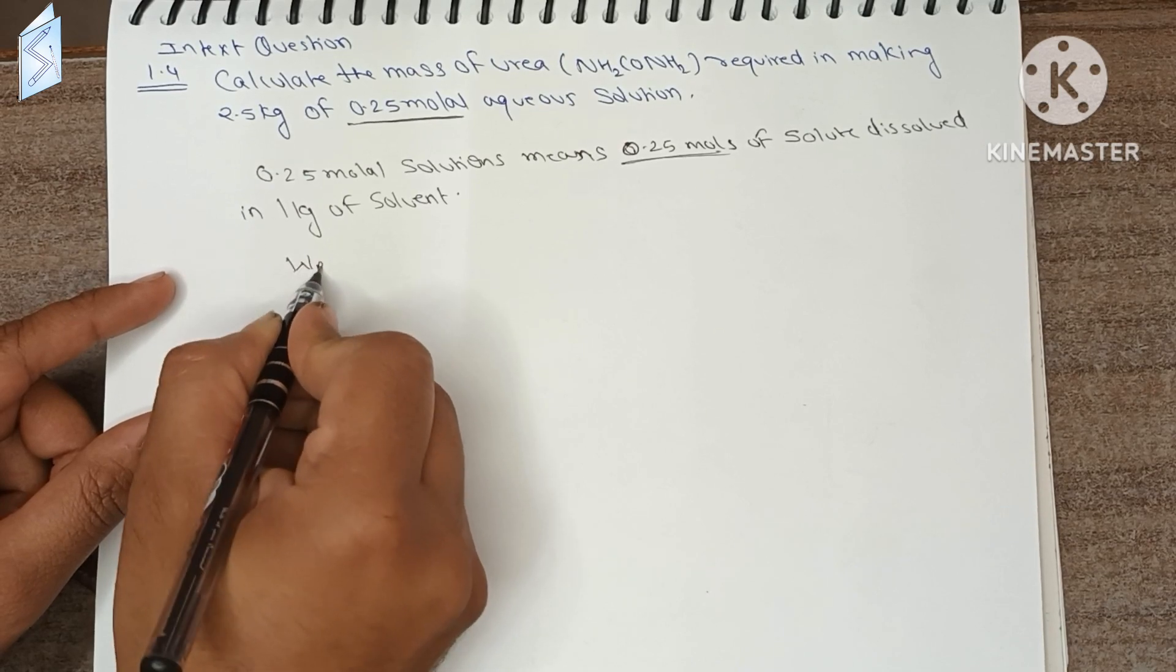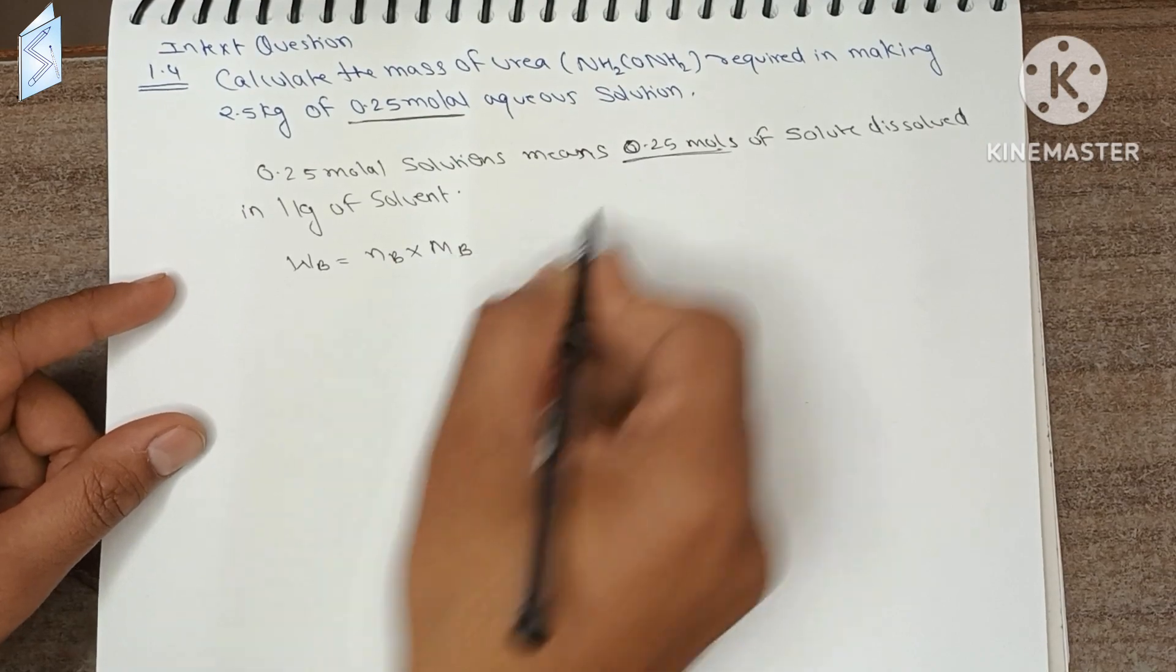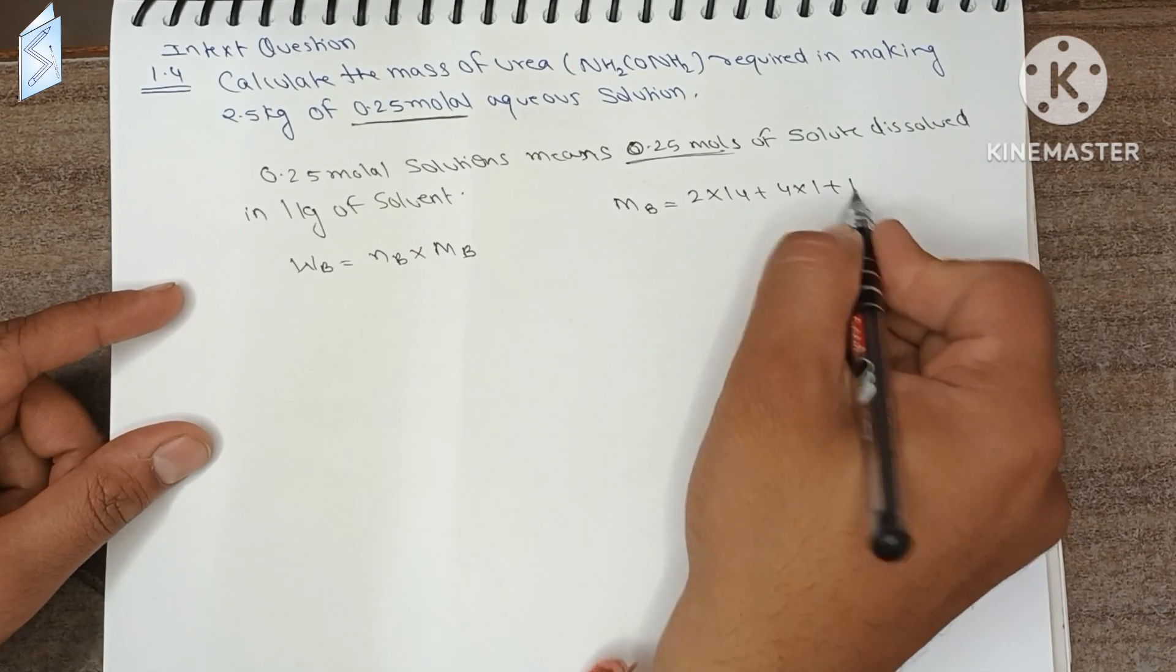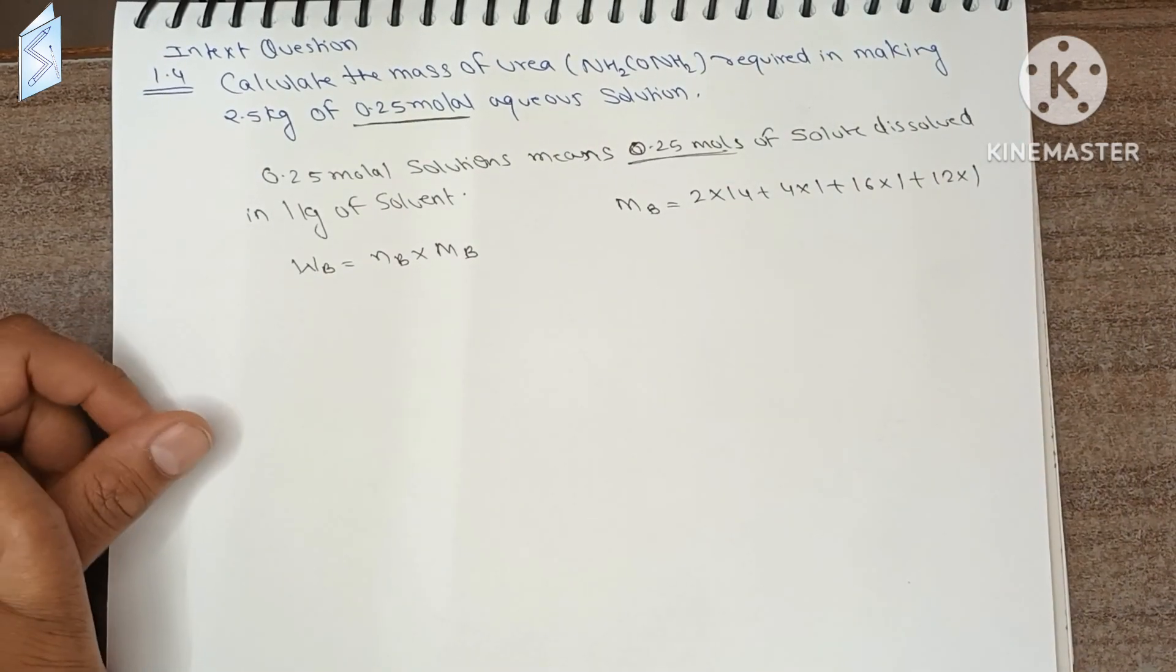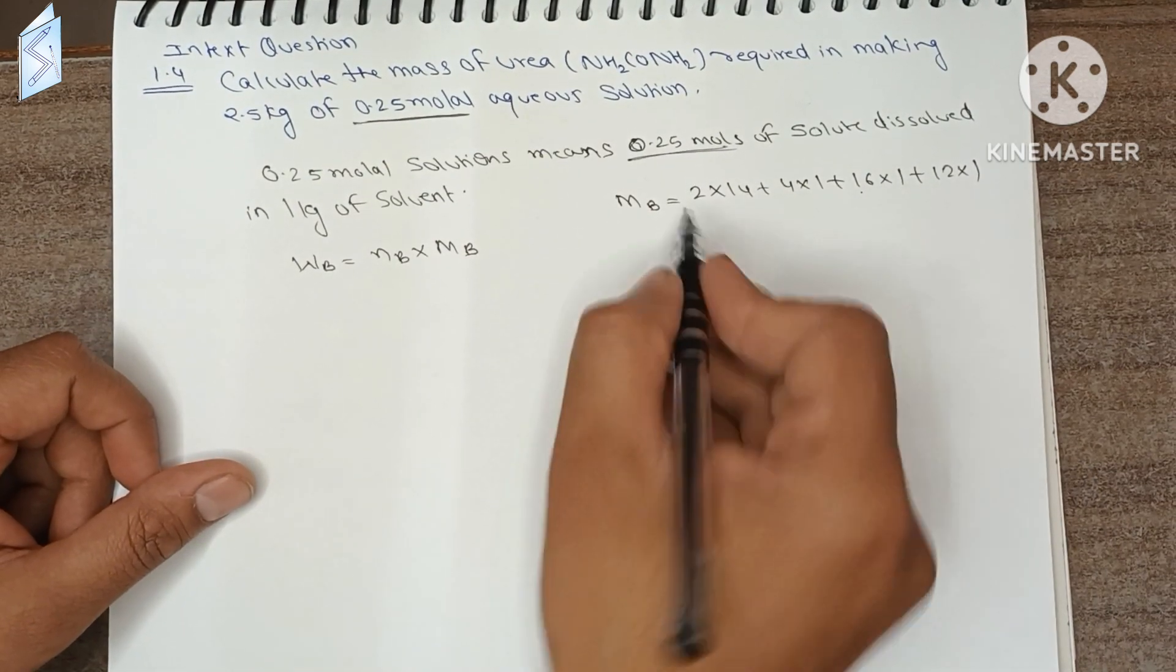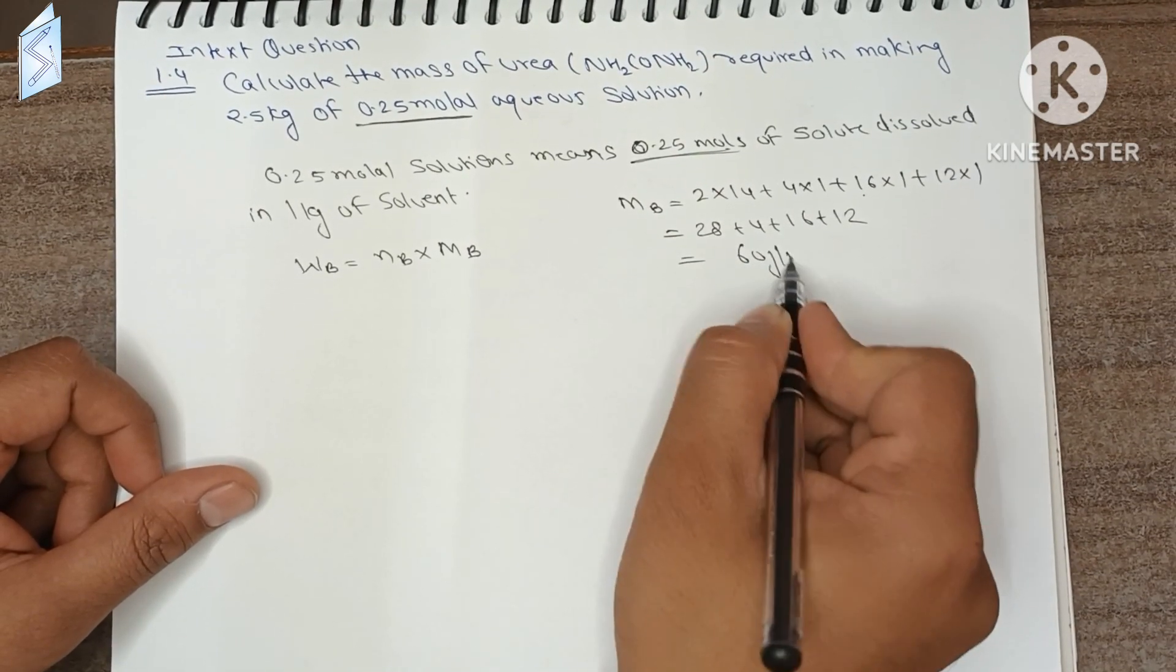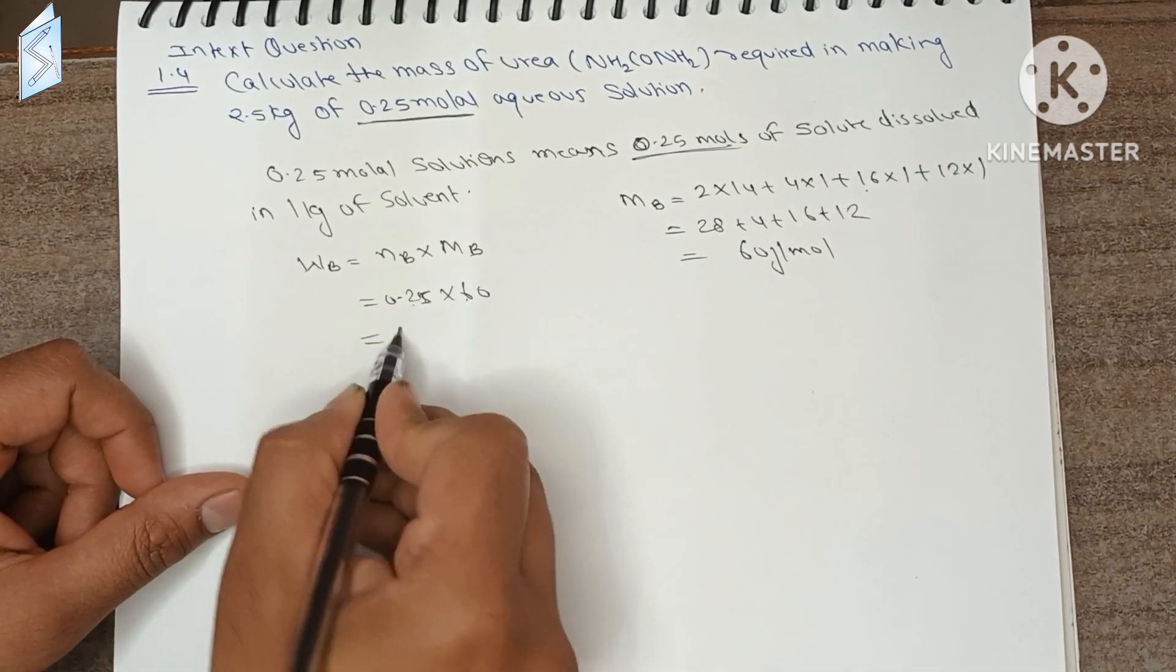WB will be number of moles into molar mass. The molar mass of urea: nitrogen is 2 into 14, hydrogen is 4 into 1, oxygen is 16 into 1, and carbon is 12 into 1. So 28 plus 4 plus 16 plus 12 will be 60 gram per mole. So 0.25 into 60 is 15 gram.